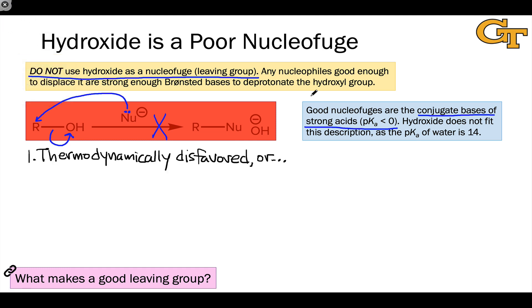Now, considering the basicity of alkoxides, of which hydroxide is a prototypical example that we talked about in the last video, you may think, well, surely there's a strong enough nucleophile, right? There's something that's so unstable with a negative charge that the right-hand side would be stable relative to the left-hand side. What about something like C3-? This anionic carbon is clearly less stable than the anionic oxygen that we end up with.